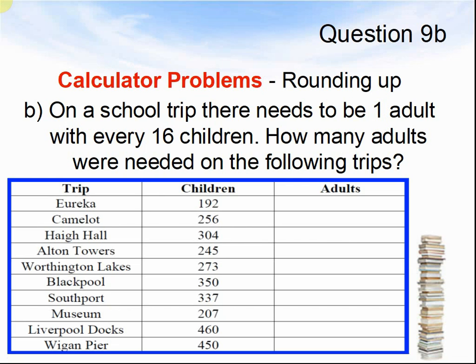Question 9b. On a school trip there needs to be one adult for every 16 children. How many adults were needed on the following trip? Remember, if you need to round up. Pause the video until you are ready to answer the next question.